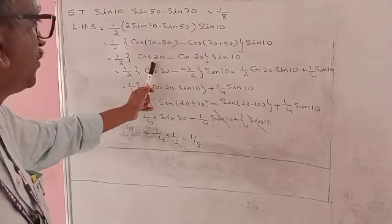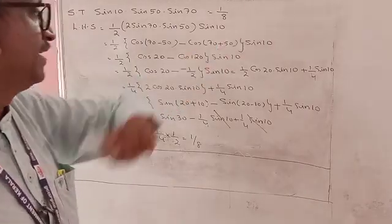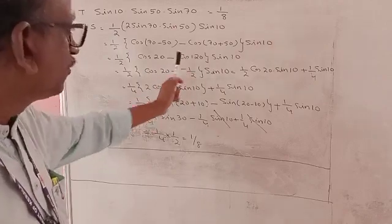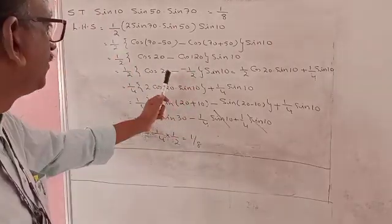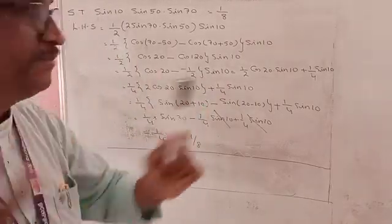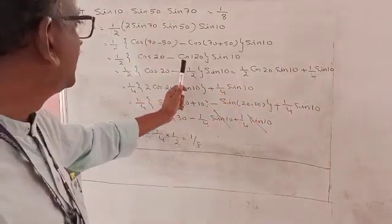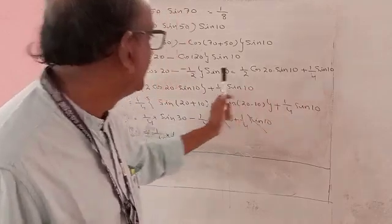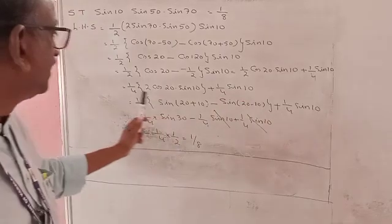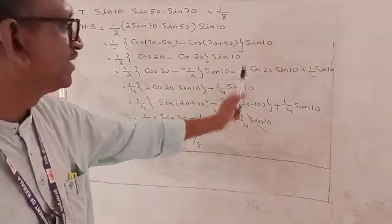Applying the formula: 70°-50° = 20° and 70°+50° = 120°, so we get 1/2 · [cos 20° - cos 120°] · sin 10°. cos 120° = -1/2. Therefore this becomes 1/2 · [cos 20° - (-1/2)] · sin 10°. Removing the bracket: 1/2 · cos 20° · sin 10° + 1/2 · 1/2 · sin 10°. This gives 1/2 · cos 20° · sin 10° + 1/4 · sin 10°. Now multiply and divide by 2: 1/4 · (2 cos 20° · sin 10°) + 1/4 · sin 10°.